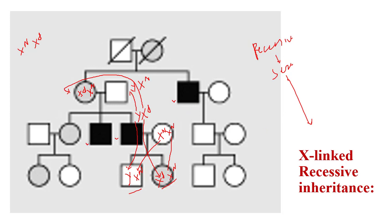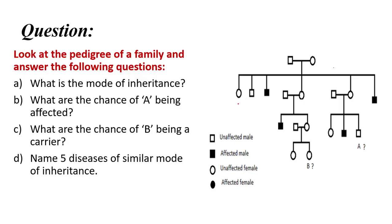Once a female is a carrier, there is a 50% chance of inheriting the abnormal gene to her offspring. For daughters, there is a 50% chance of being a carrier, and for sons, there is a 50% chance of being affected.